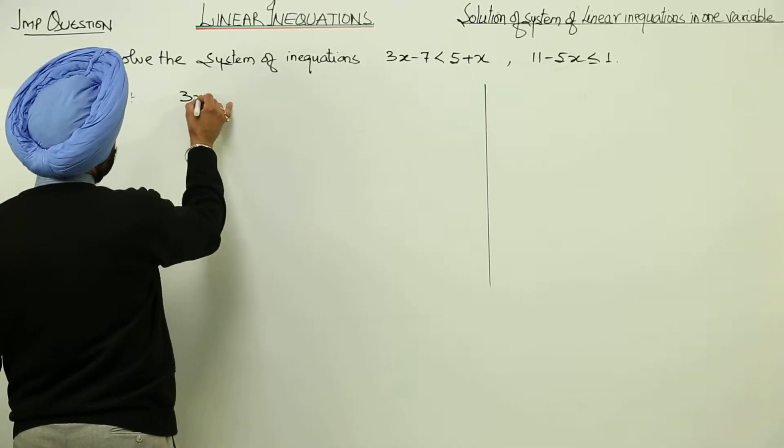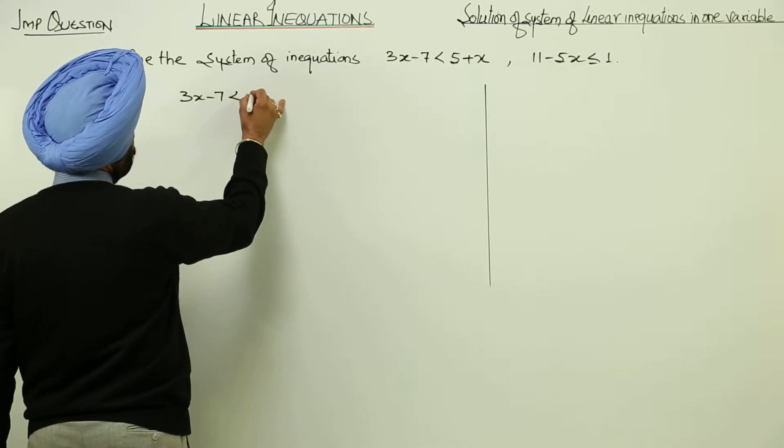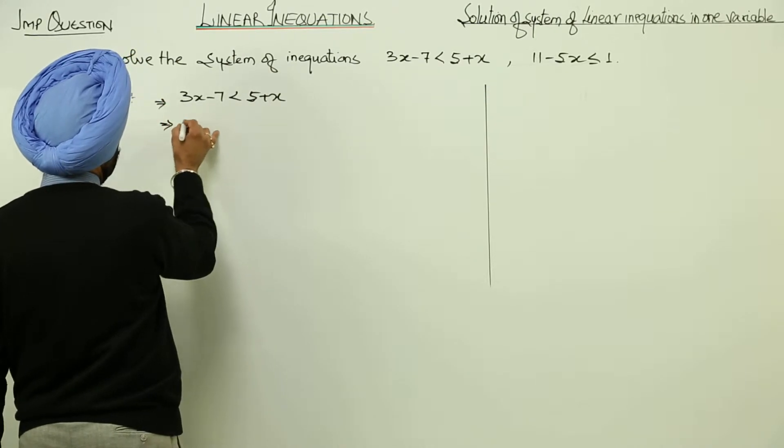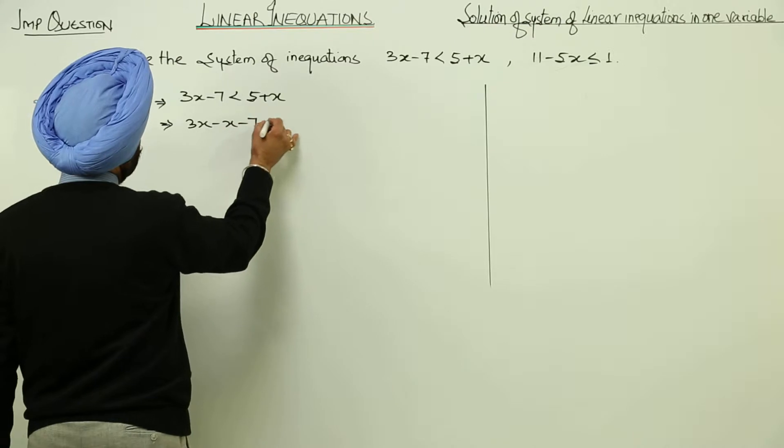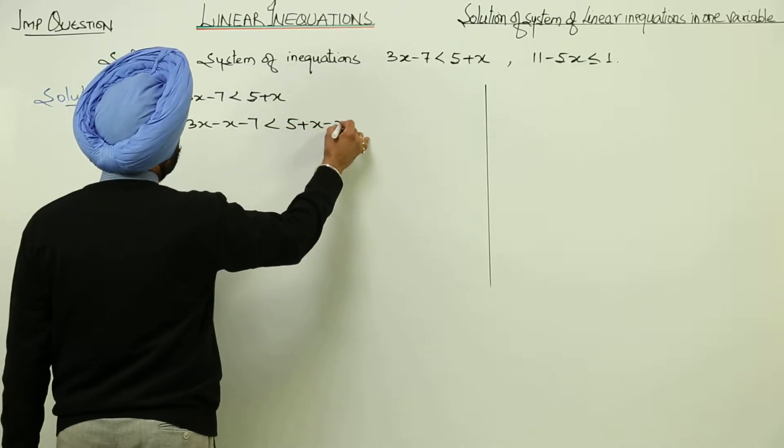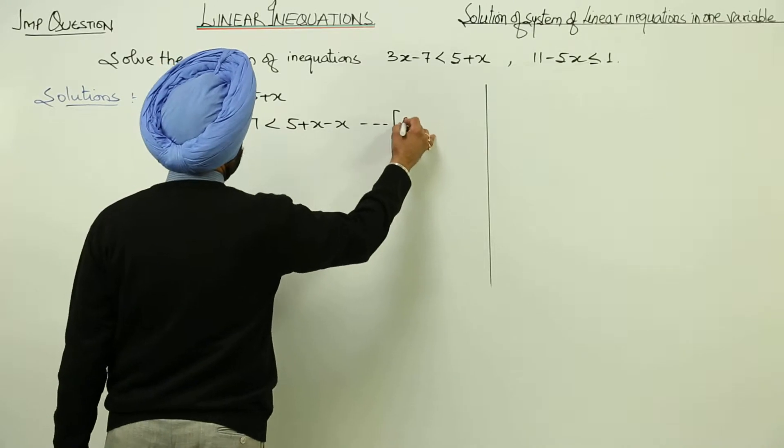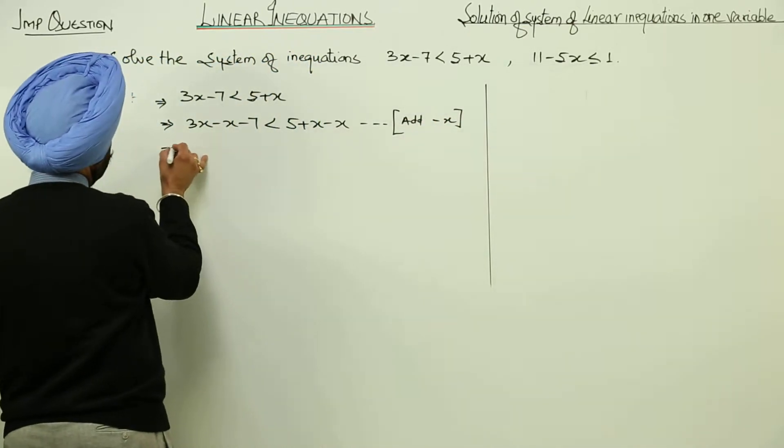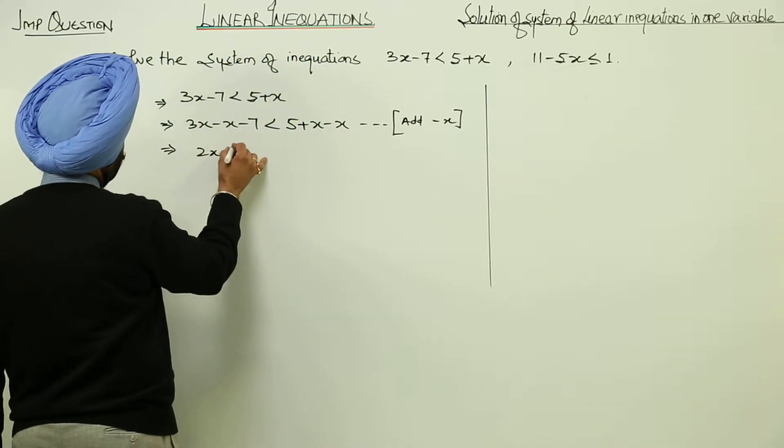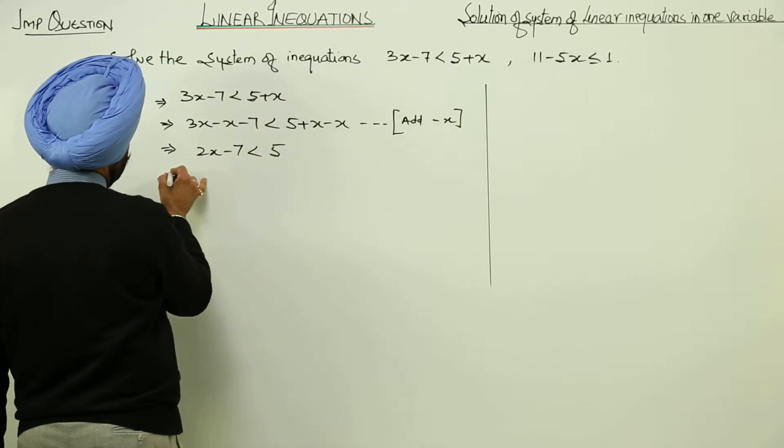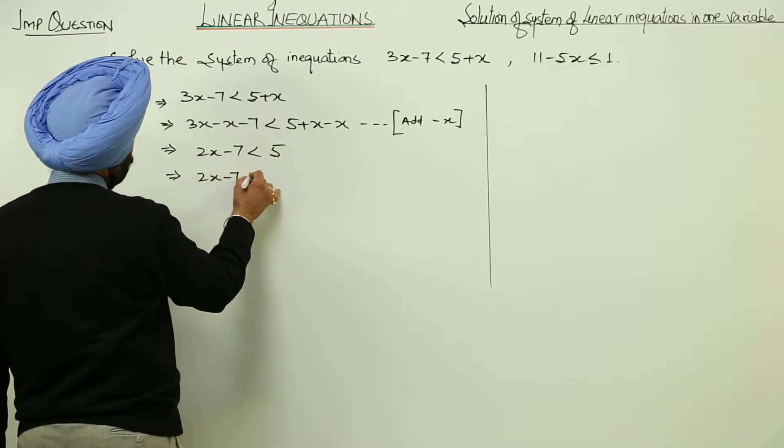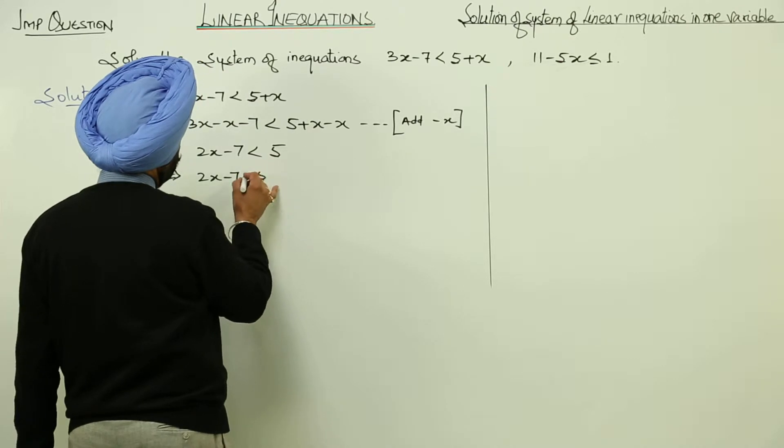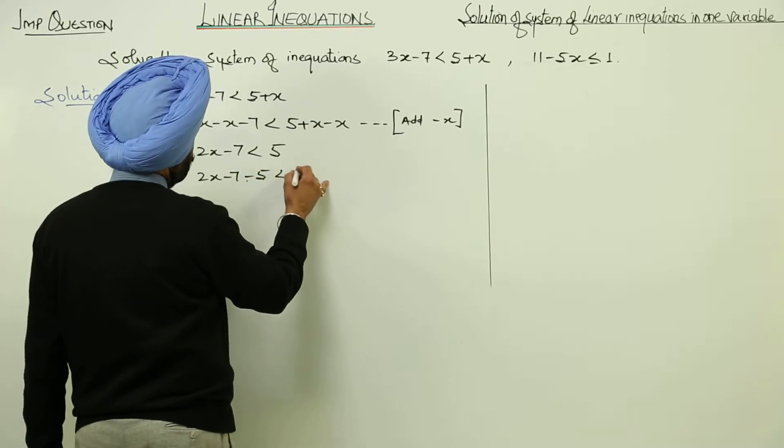We are having 3x minus 7 is less than 5 plus x. Subtracting x from both sides: 3x minus x minus 7 is less than 5 plus x minus x. That gives us 2x minus 7 is less than 5. Now adding 7 to both sides.